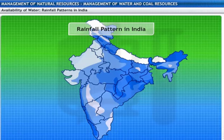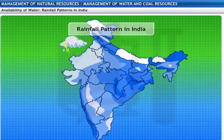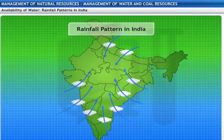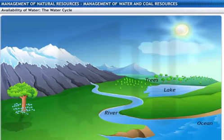The rainfall pattern in India differs in different geographical regions. Tropical regions receive more rainfall compared to desert regions. Rains in India are largely due to the monsoons, which come only for a few months — generally between June and September. To understand water availability better, let's take a look at the water cycle.